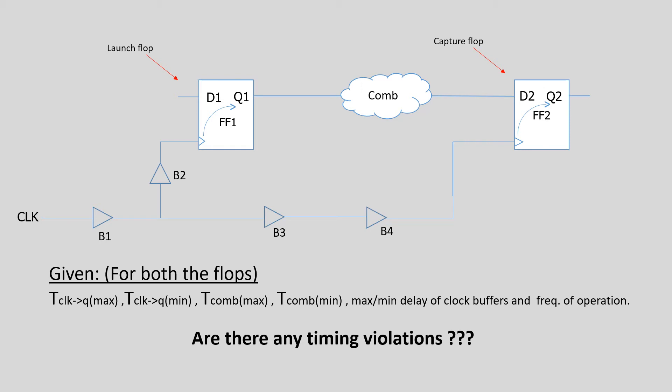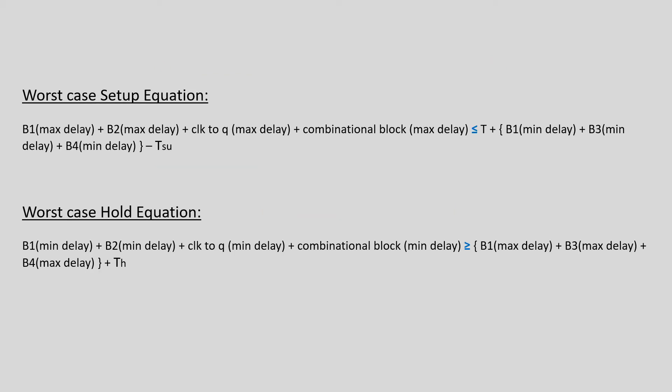Taking into consideration the worst case for setup — that is, the launch clock is arriving late, the data is arriving late, and the capture clock is arriving early — the worst case setup equation will look something like this: max delay for clock buffer B1, max delay for clock buffer B2, clock-to-Q max delay, and max delay for the combinational block comprise the arrival time, which should be less than or equal to the required time. In the required time, we have the capture clock edge minus the launch clock edge (which is the time period), plus min delay for clock buffer B1, min delay for clock buffer B3, min delay for clock buffer B4, minus the setup time. If the condition satisfies, there will be no setup violation; if not, there is.